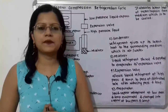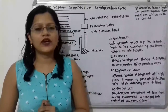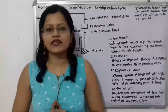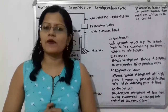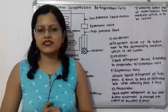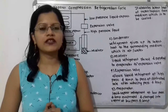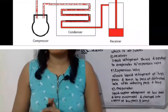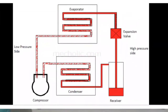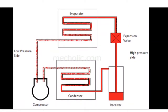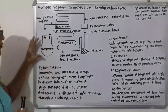Hello friends, this is Priyanka. Today we are going to study the working of a simple vapor compression refrigeration cycle. Let us first understand what the important parts of this cycle are. We can observe here: the evaporator, then the compressor, condenser, receiver, and expansion valve.